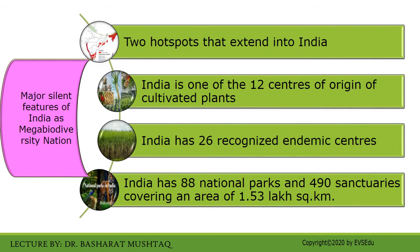Another major salient feature of India as a mega-biodiversity nation is that there are two biodiversity hotspots that extend into India, and these are included amongst the top eight most important hotspots of the world. India is one of the 12 centers of origin of cultivated crops. India has 26 recognized endemic centers that are home to nearly one-third of all the flowering plants identified and described to date. Among the protected areas, India has 88 national parks and 490 sanctuaries covering an area of about 1.53 lakh square kilometers.